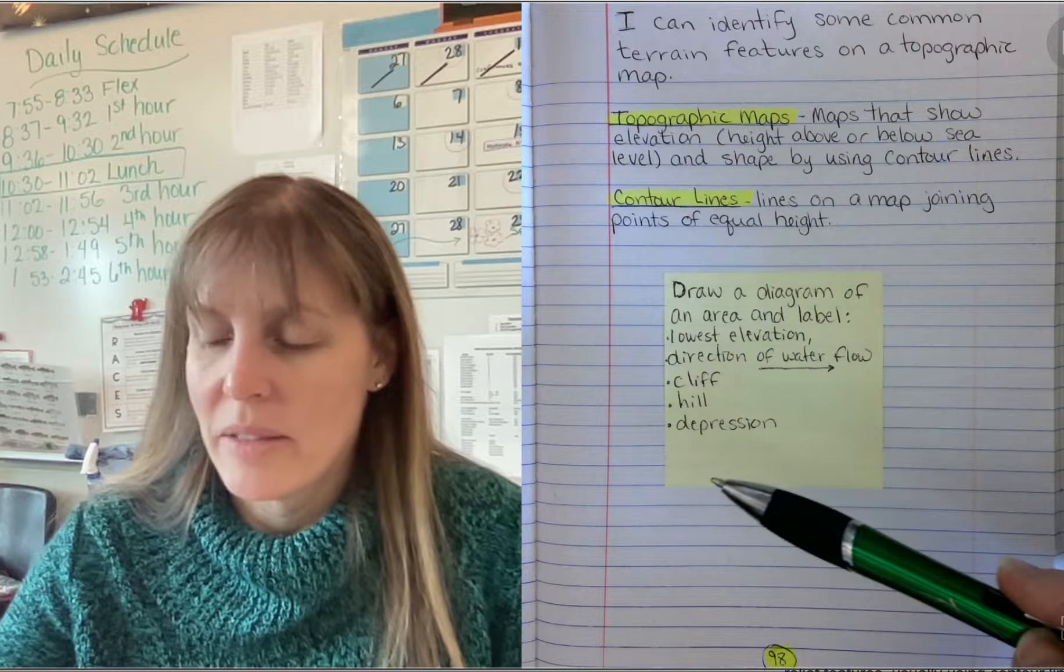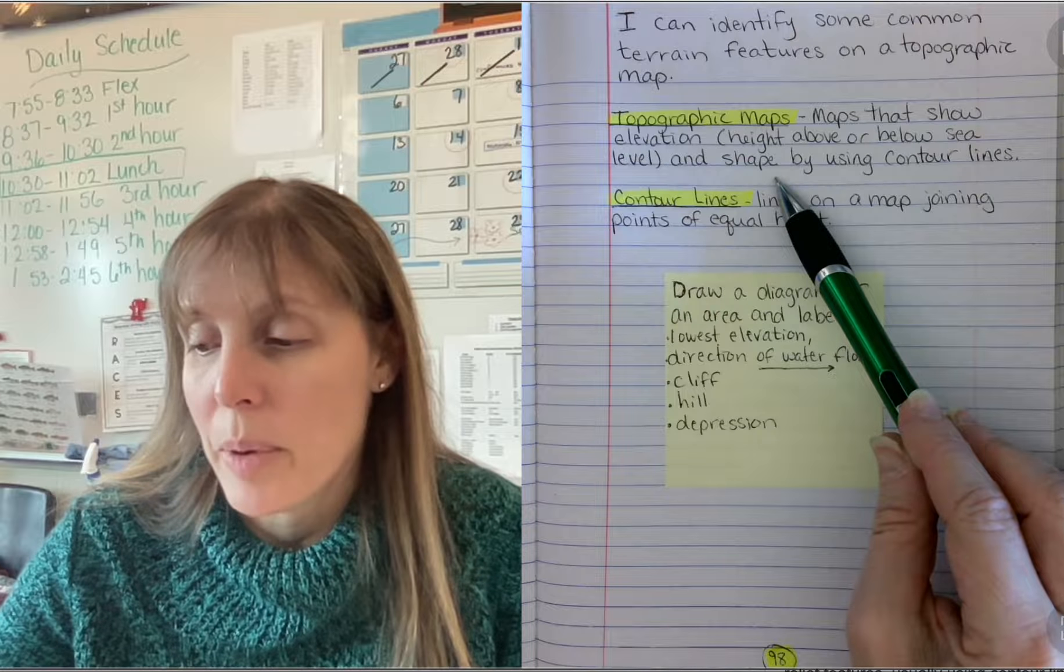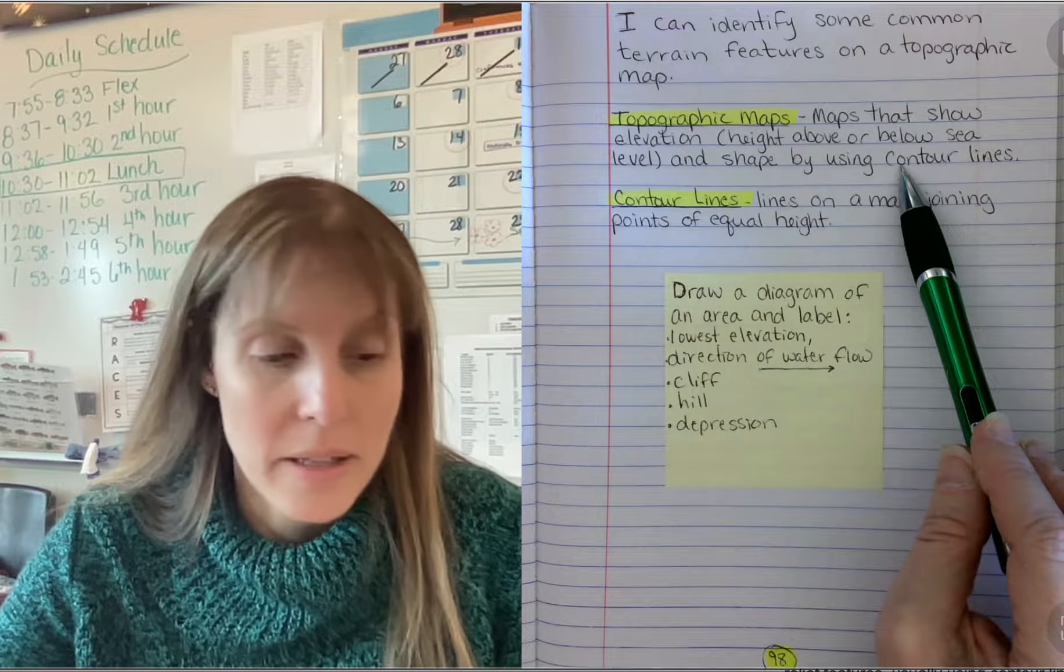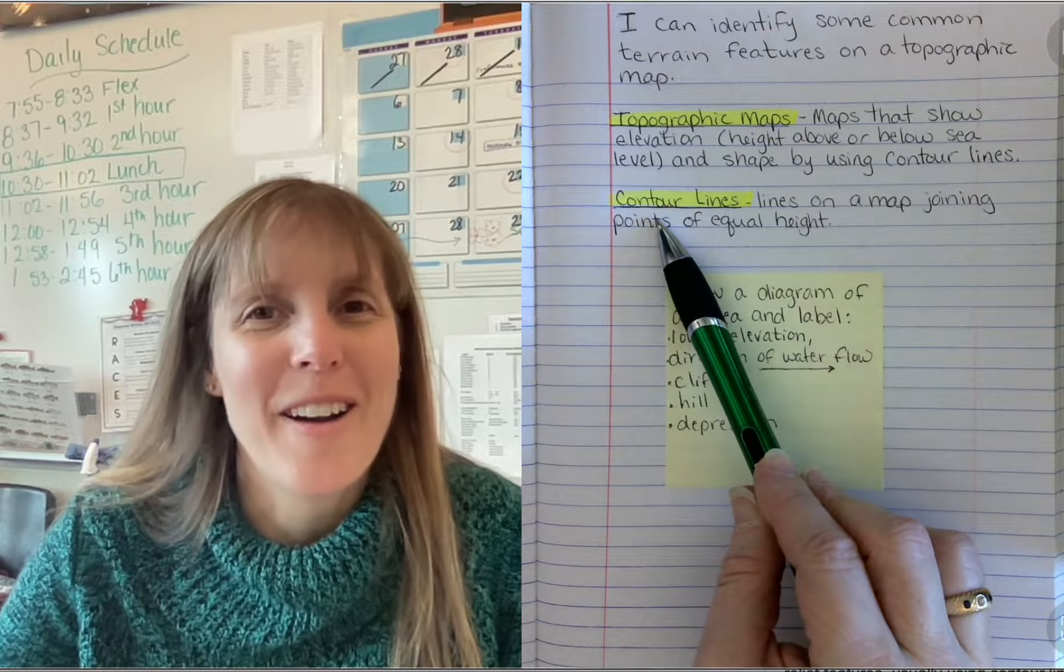These are maps that show elevation, which is height above or below sea level, and shape by using contour lines. Whoa, contour lines. What are those? Well, they're our next term.